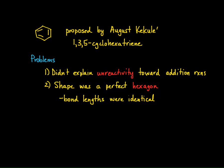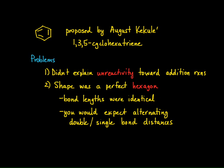If you take a look at this structure, if it were a static structure, you would expect to see alternating double and single bond distances. We know that double bonds are shorter than single bonds, so based on this proposed structure, each bond should alternate from a longer length to a shorter length. Obviously, this wasn't the case. Something else has to explain why benzene has the shape that it has, and we're going to explore this in the next section.